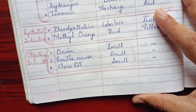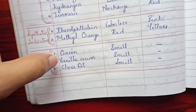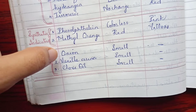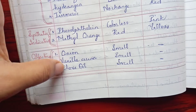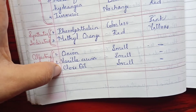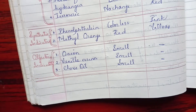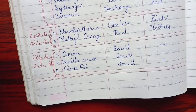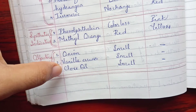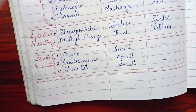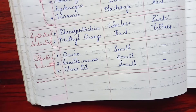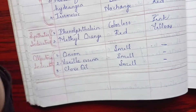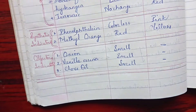The last type are olfactory indicators, which are natural indicators that give a sense of smell instead of color change. Onion, vanilla essence, and clove oil give their own characteristic smell in acid solution. If you get their smell, the solution is acidic in nature; if you don't get their smell, then it is basic in nature.